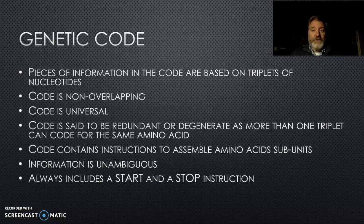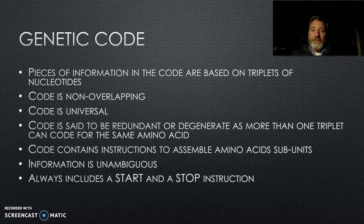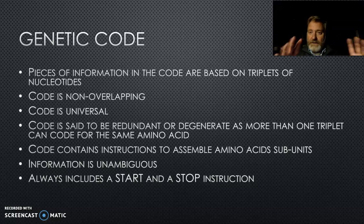The code is said to be redundant or degenerate, as you often have more than one triplet coding for the same amino acid. There are 64 potential combinations but only 20 amino acids available. The code contains the instructions to assemble amino acids into a protein. It's unambiguous — what it tells you is what it tells you — and it includes a start instruction and three stop instructions, telling the cell when to start and stop reading. These are key features of the genetic code.